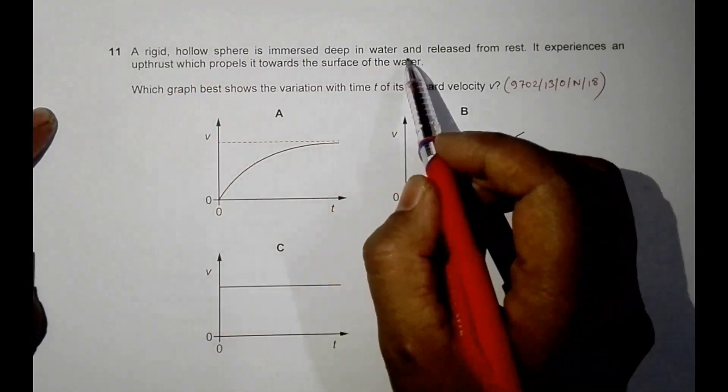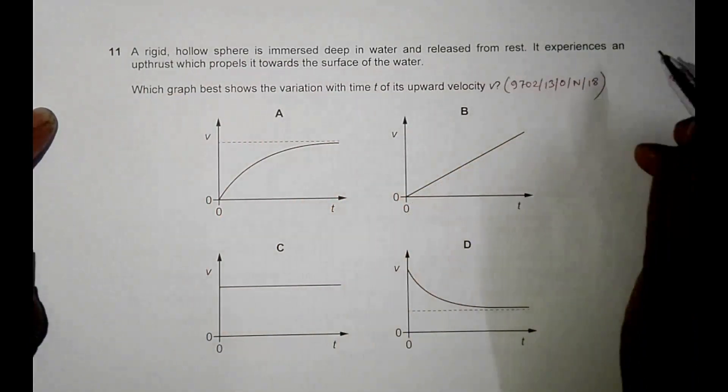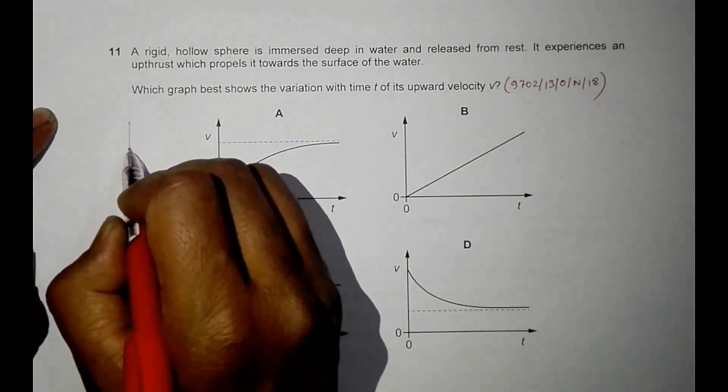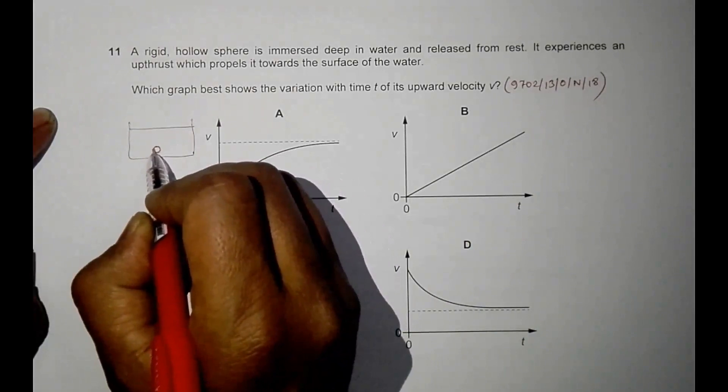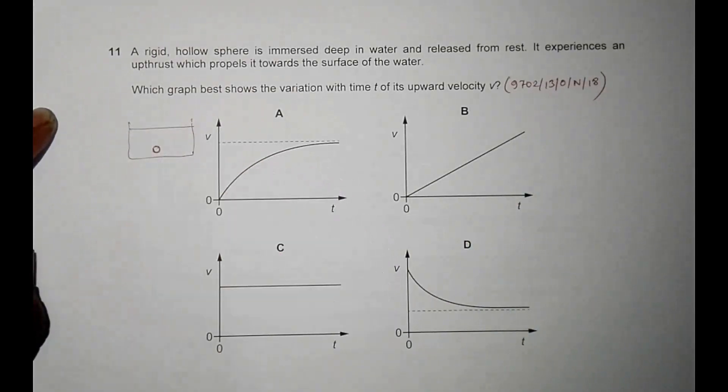If I have a diagram of a water vessel like this, I have this hollow sphere here and it is released from rest. This means that initially the velocity is zero.